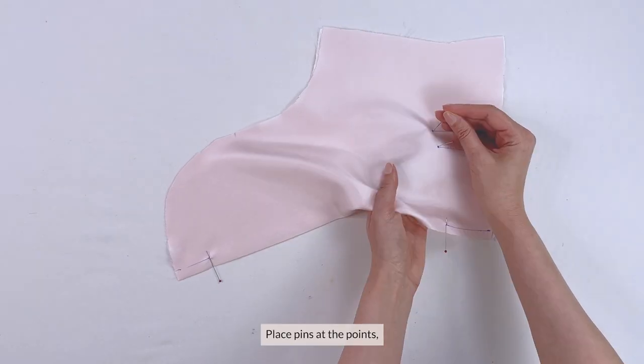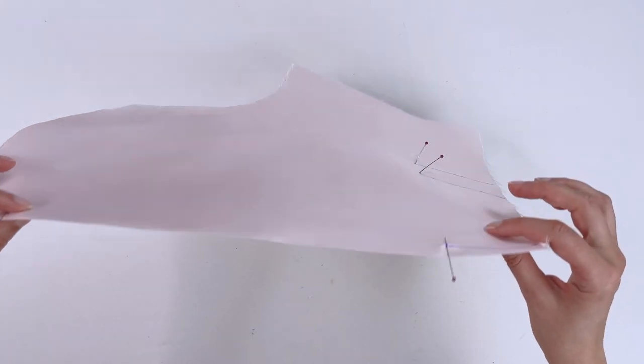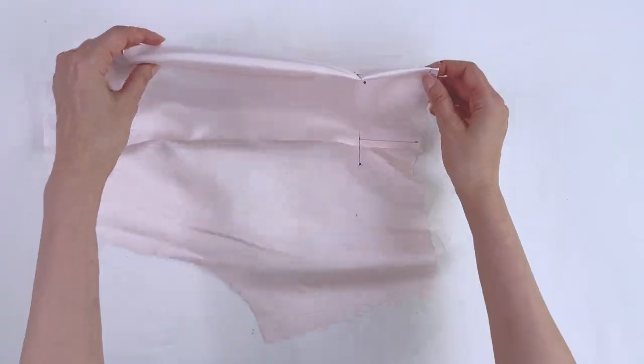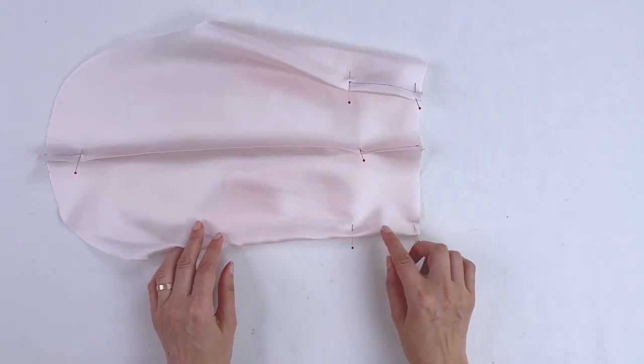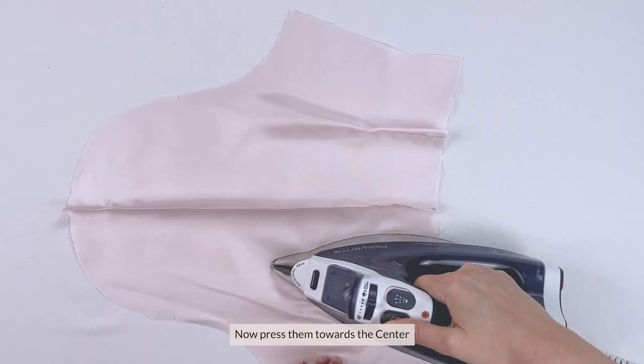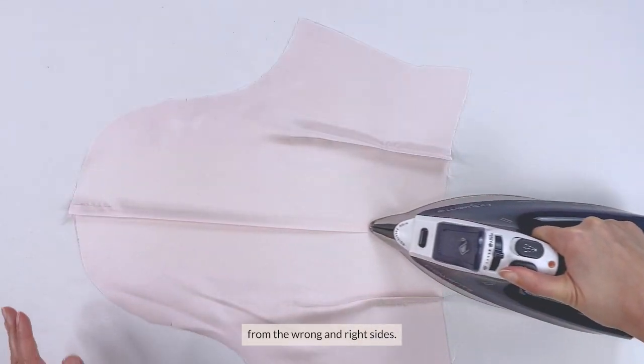Place pins at the points and then pin the tuck darts and sew. Now press them towards the center from the wrong and right sides.